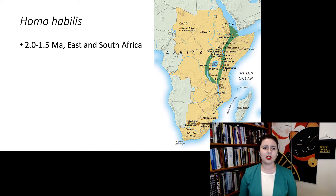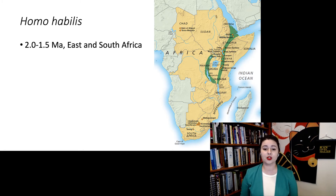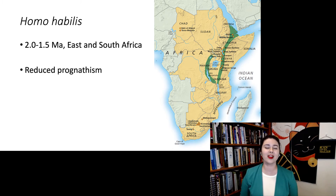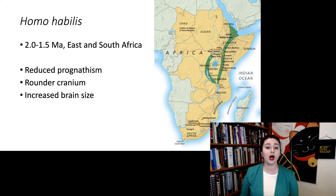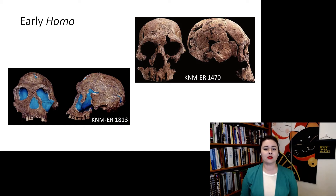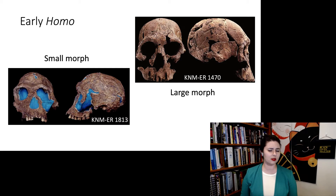Homo habilis — we have found a few more specimens than just that one. We think it's about two to one and a half million years ago in both East and South Africa. In general, we are seeing some reduced prognathism, a rounder cranium, and slightly increased brain size. Here we have a slightly smaller individual and a slightly larger one.